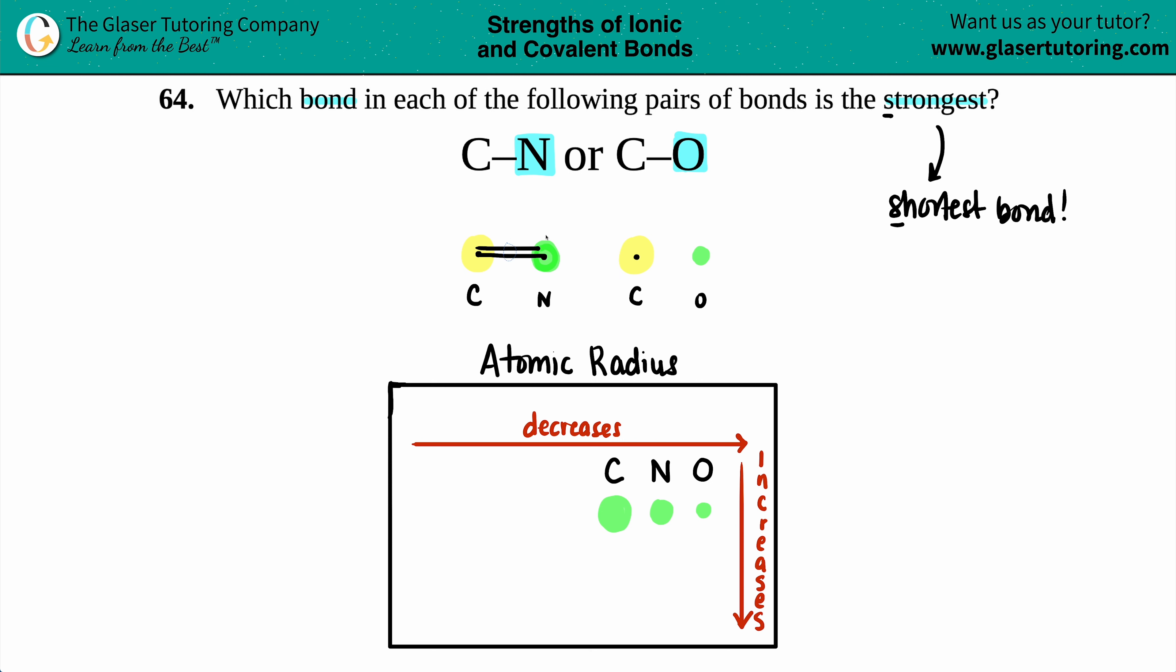So maybe if we just make this a little bit better, we're going to bring the oxygen a little bit in just to show you the idea here. But in this case, a smaller bond comes from a smaller radius. And that's why the C-O bond is smaller than the C-N bond, because oxygen is smaller.